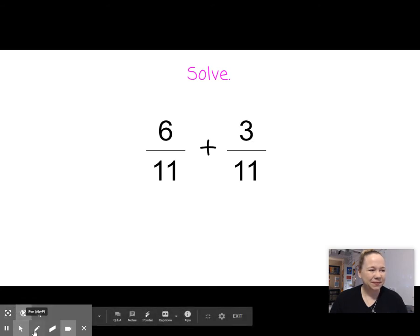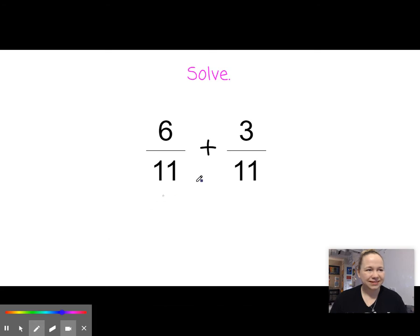How about this one? Why don't you go ahead and try it on your own? Okay, so the denominator stays the same. Six plus three is, you got it, nine. Nine elevens. Well done.